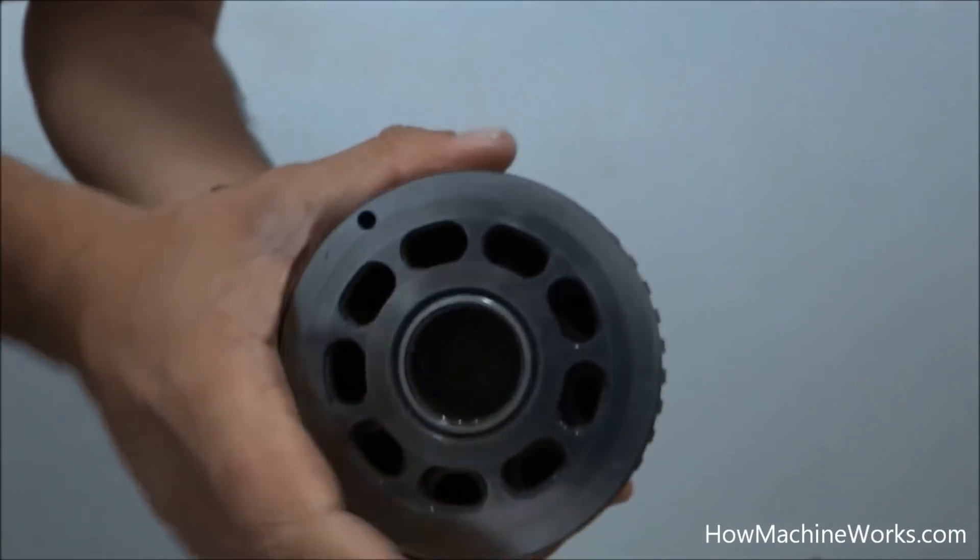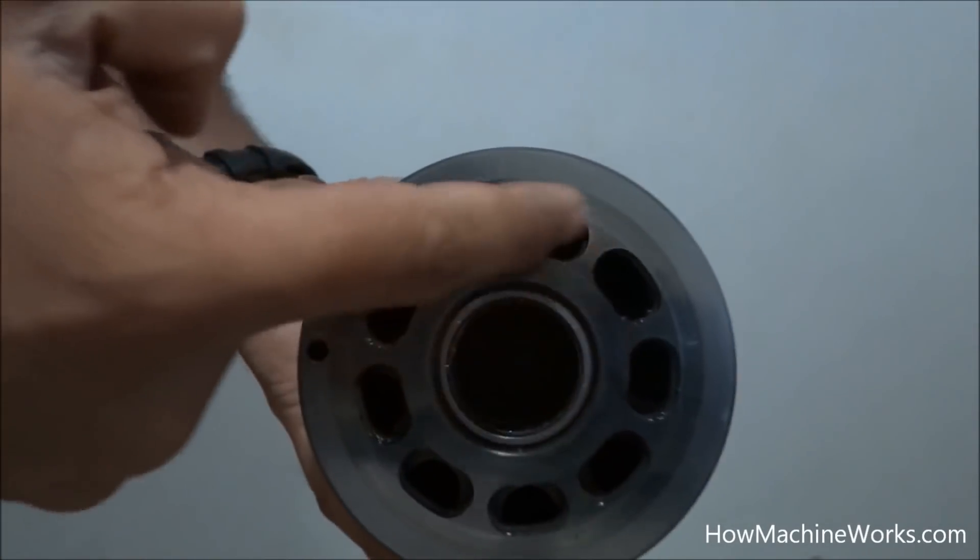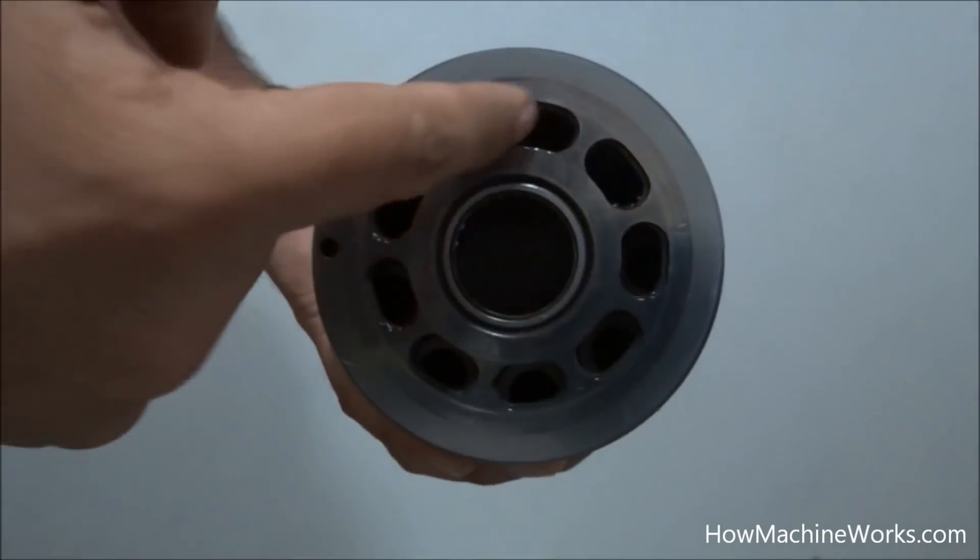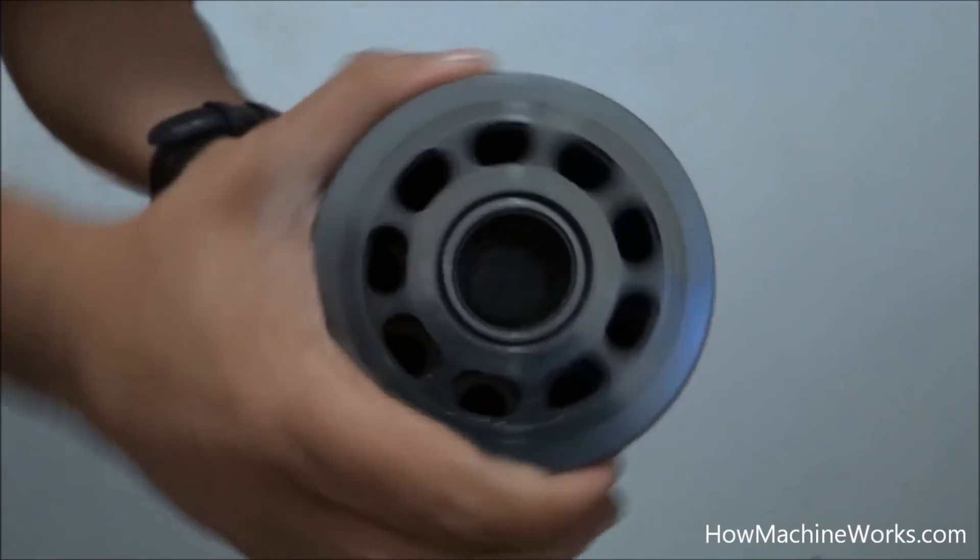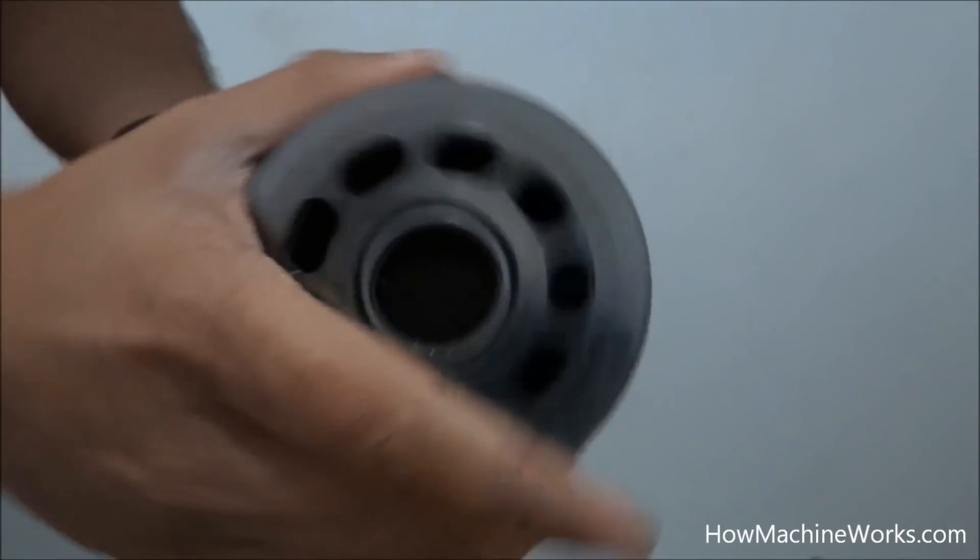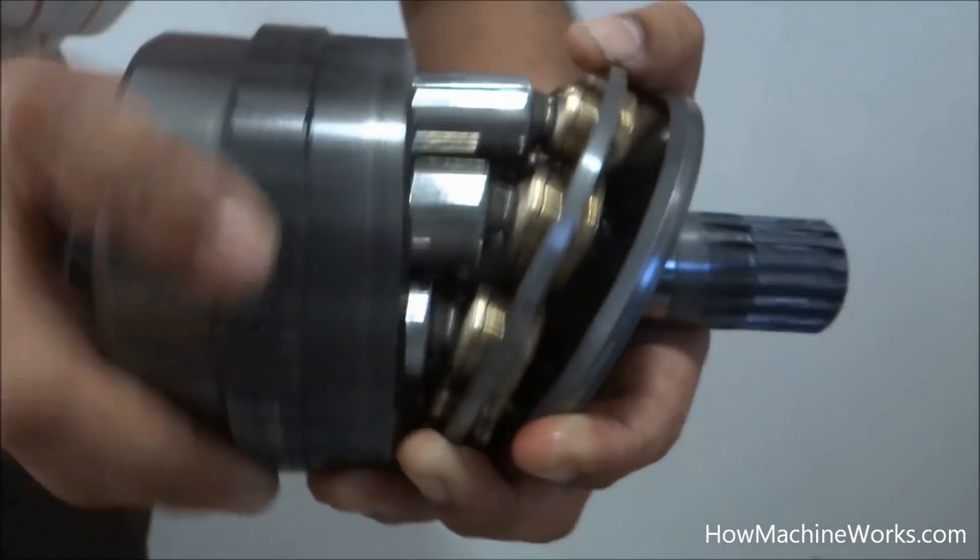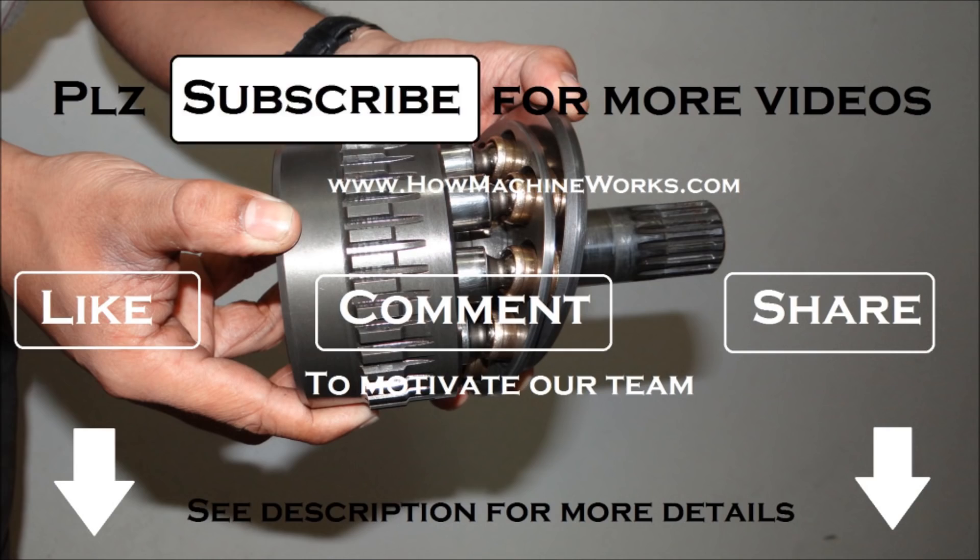The change in swash plate directly affects the flow. When increasing the angle, flow increases. When decreasing the angle, flow decreases. Because when the swash plate is vertical, there is no piston movement. That is, there is no axial movement of the piston and no flow is happening.